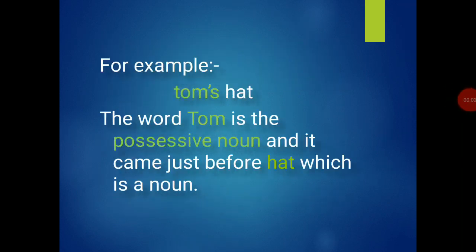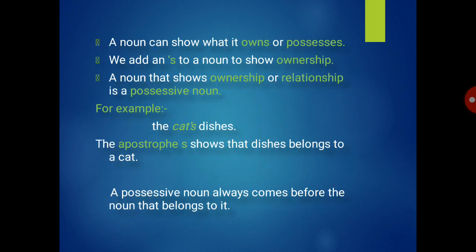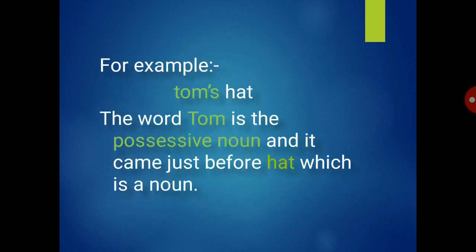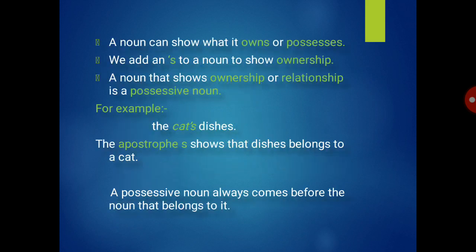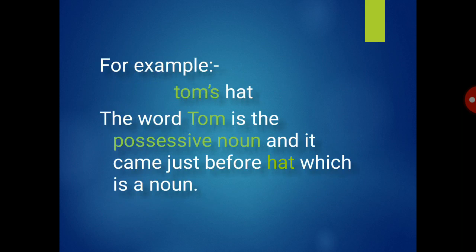Some more examples: Tom's hat — the word Tom is the possessive noun and it comes just before hat, which is the noun. So from two examples — the cat's dishes and Tom's hat — it is clear that a possessive noun always comes before the noun that belongs to it.